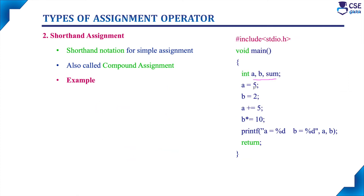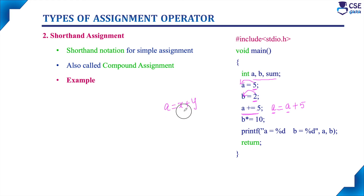Here is an example program. The value 5 is assigned to a and 2 is assigned to b. We implement a += 5, which means a = a + 5. One important thing to remember: the left-hand side variable and the right-hand side first operand must be the same. For example, a = x + y cannot be implemented as shorthand since the right-hand side first variable differs from the left-hand side. Shorthand assignment is only applicable when both are the same variable.